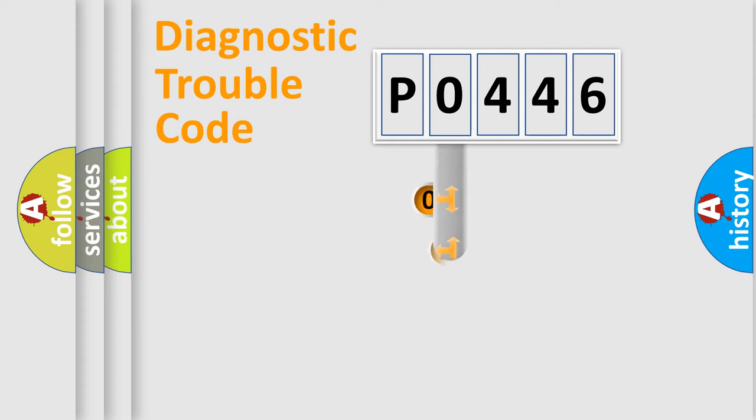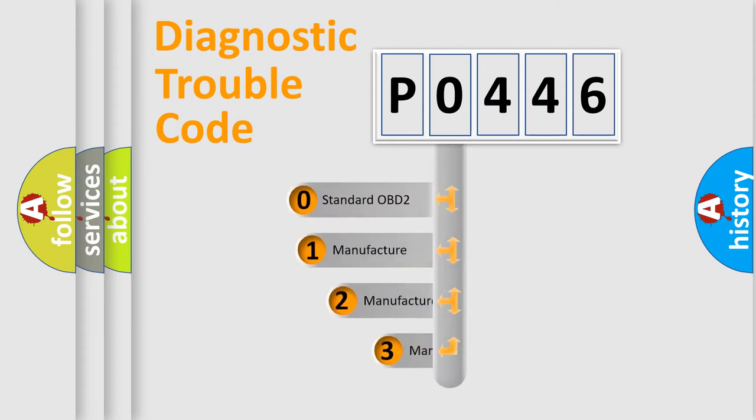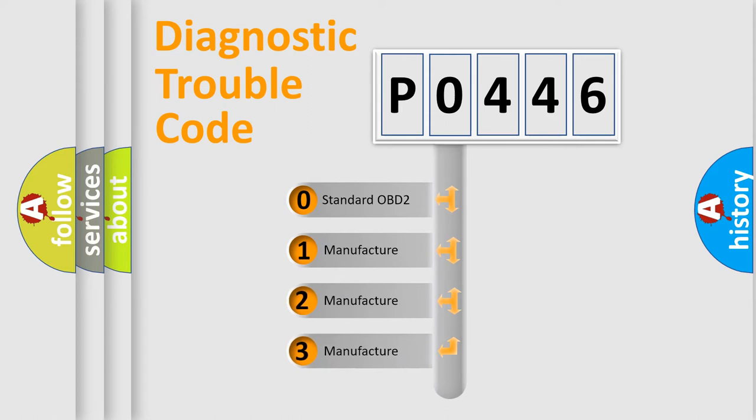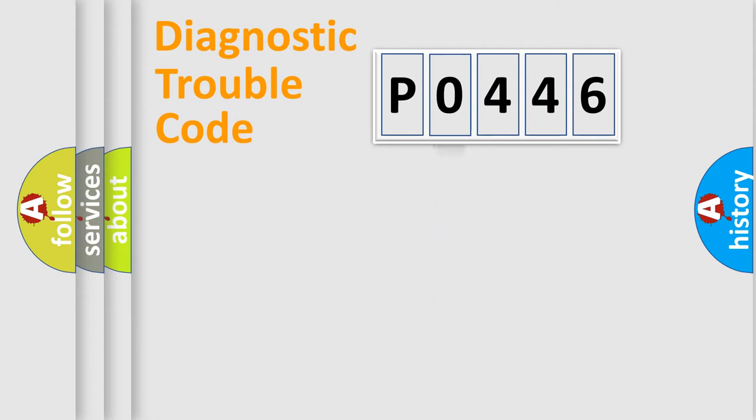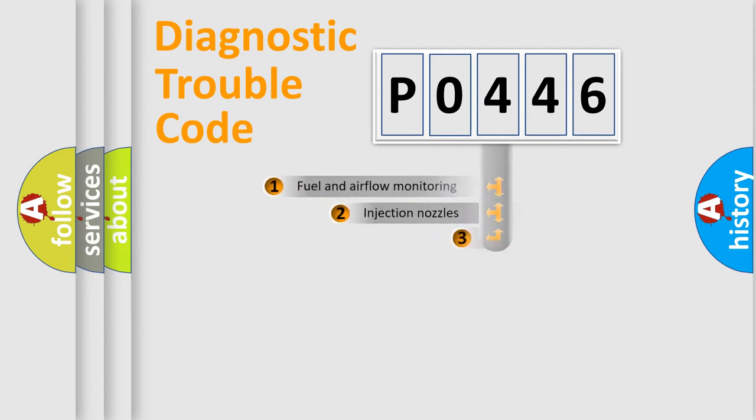This distribution is defined in the first character code. If the second character is expressed as zero, it is a standardized error. In the case of numbers 1, 2, or 3, it is a more precise expression of the car-specific error.